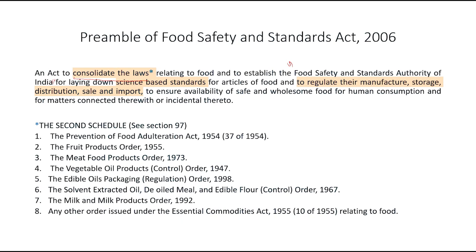FSSAI lays down scientific-based standards. It regulates various aspects from the point when food is harvested after it leaves the hands of the farmer — from farm to fork, everything has been regulated by the FSSAI Act. The five things regulated are: manufacture, storage, distribution, sale, and import.